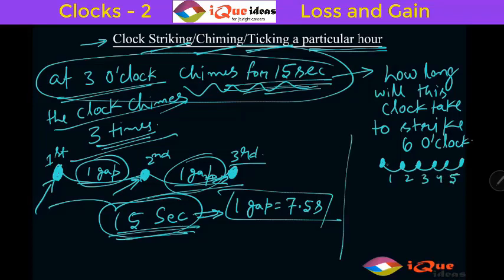So to strike 6, the clock has to travel or the number of gaps is only 5 gaps. We have already calculated for this clock one gap is 7.5 seconds. So 5 gap will be 5 into 7.5 that will be 37.5 seconds.